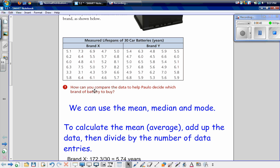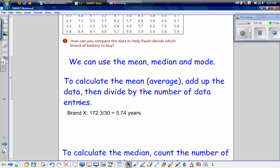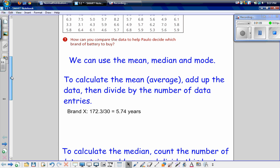Let's start off with something we know. We know how to calculate the mean, which is just another word for average, the median, which is the middle number in the set, and the mode, which is the number that's repeated the most times. So to calculate the mean, we add up all the data in the sets, all these data entries, and then we divide by the number of data entries. So here we have 30 data entries. So our total, once we add them all up, is 172.3. We're going to divide it by 30 to get 5.74 years. So that is our average for brand X.